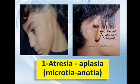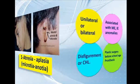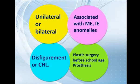Number one is the atresia or aplasia of the auricle. It's called microtia — microtia is an abnormally deformed auricle — while anotia is a complete absence of the auricle. This condition might be unilateral or bilateral. It can be associated with middle ear or inner ear anomalies. Disfigurement is the main problem; usually the parents, especially the mother, are complaining about the disfigurement of their child's ear.